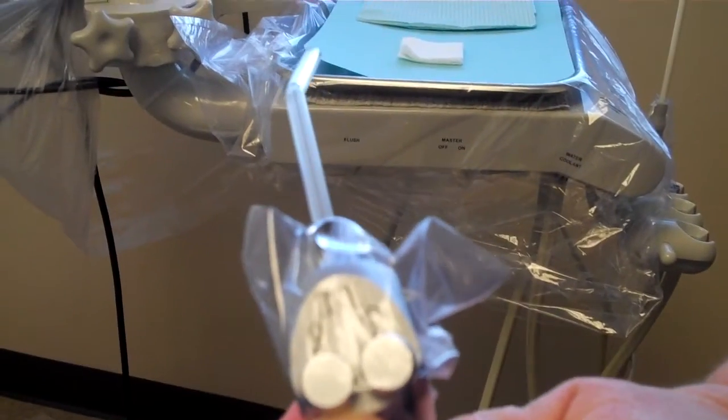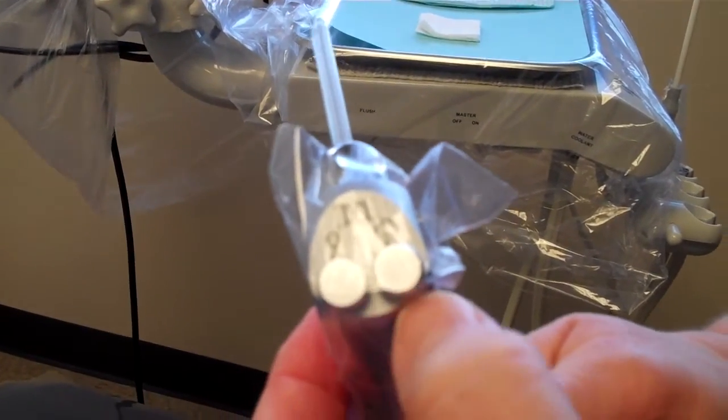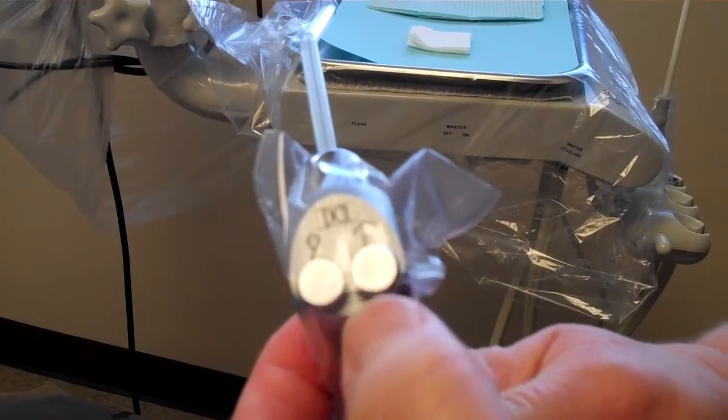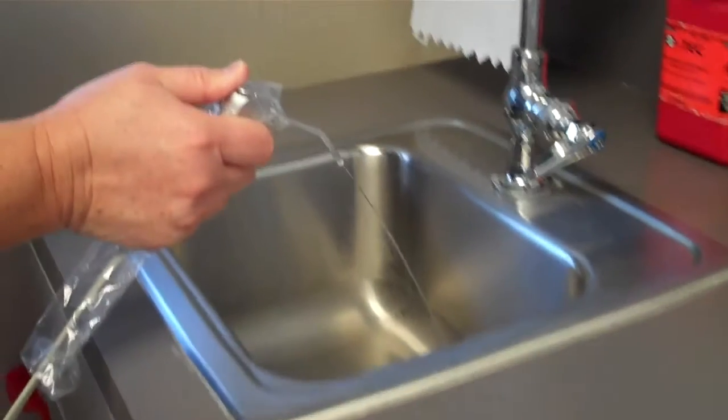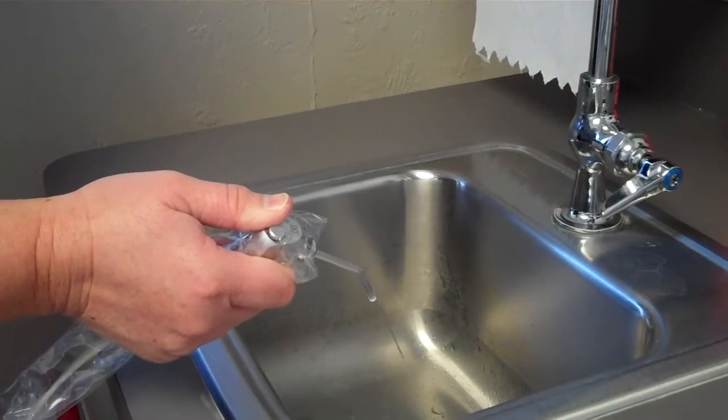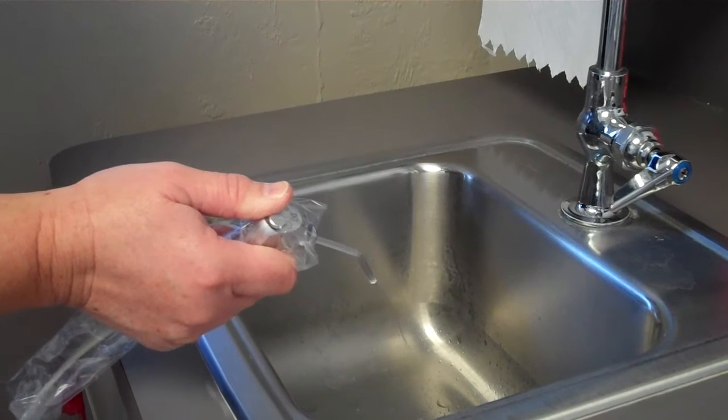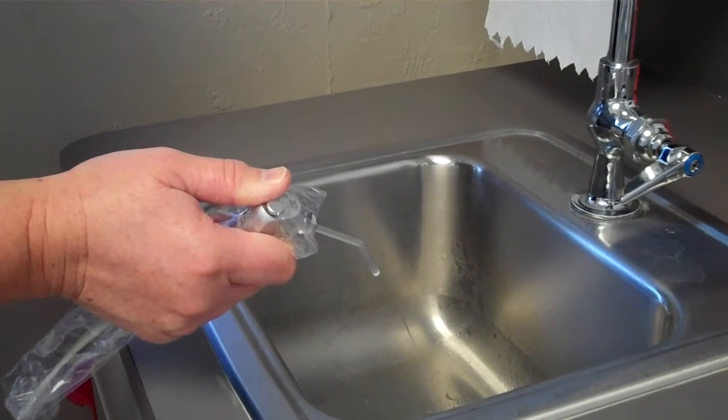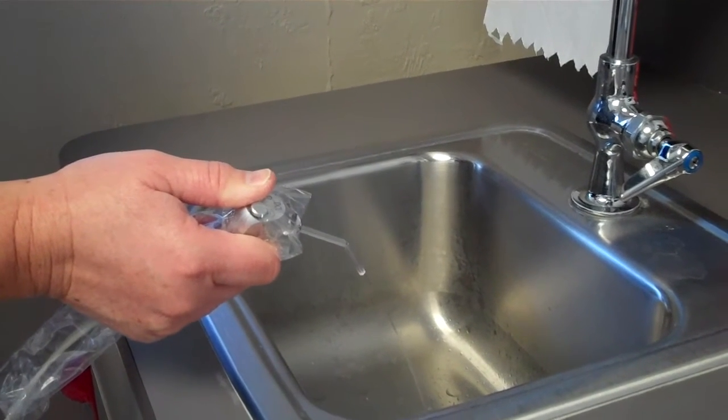And what you're going to do with the air and water syringe: the button on the left has a teardrop and the one on the right has a cloud. We're going to depress the teardrop for two minutes, and we will drain this water for two minutes prior to the start of our day. This will be before any morning huddle that occurs. You'll hold this button down for two minutes.